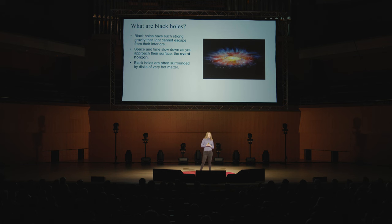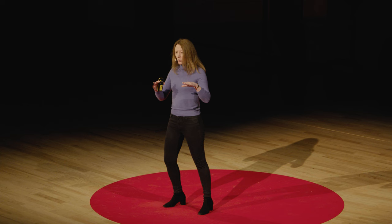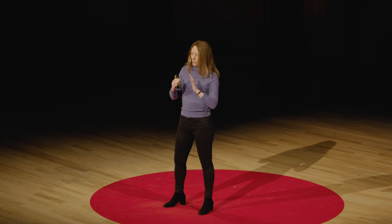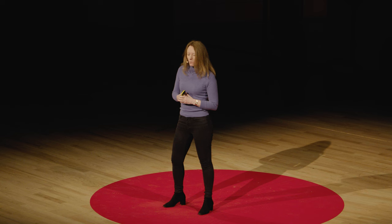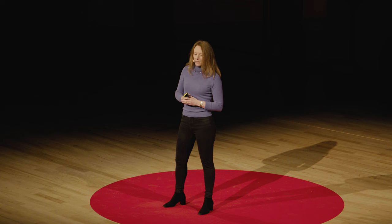Black holes are things which have such strong gravity that nothing can escape. Space and time slow down. What you see visualized in movies like Interstellar is close to what we think is the reality. There's a kind of surface called the event horizon. As you go near there, your clocks and watches will go crazy. Typically, a black hole is surrounded by a lot of heavy stuff moving into it — the kind of image familiar from Interstellar, showing all the things spiraling down into the black hole.